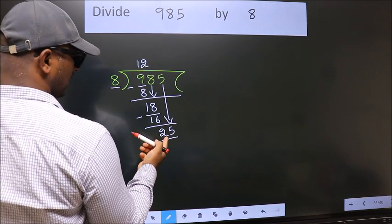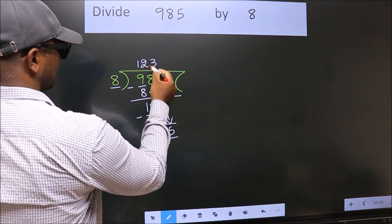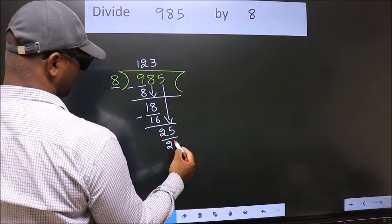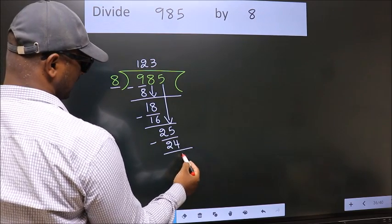25. A number close to 25 in the 8 table is 8 threes, 24. Now, we subtract. We get 1.